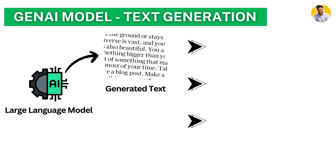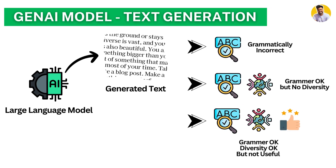Let's take an example. You generate text from a large language model — that text should be grammatically correct. If it's not grammatically correct, that's the first red flag. Even if it is grammatically correct but has no diversity or contains racism, it's of no use. And if it has grammar and diversity but no useful information, that's also a big red flag.